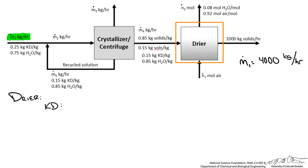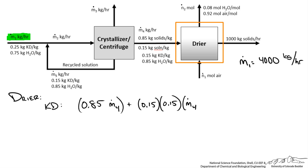Let's do a potassium dichromate balance around the dryer. We know that 85 weight percent of stream 4 entering the dryer is our potassium dichromate solids. However, we also have potassium dichromate in the solution — 15 weight percent of the solution, which is 15 weight percent of the main mass flow rate, is potassium dichromate. These two values must equal all of the potassium dichromate coming out, which is 1000 kg per hour. Solving for M4, we get 1146 kg per hour.